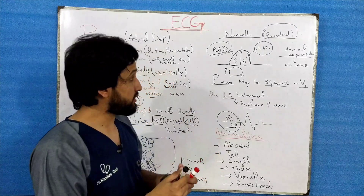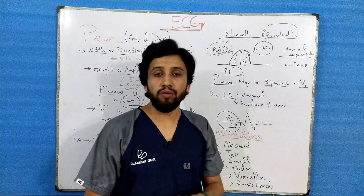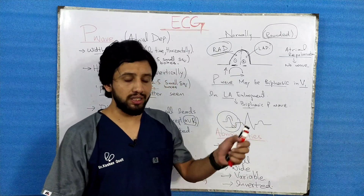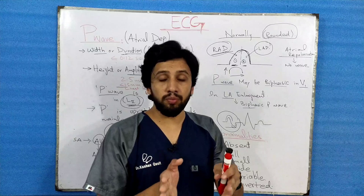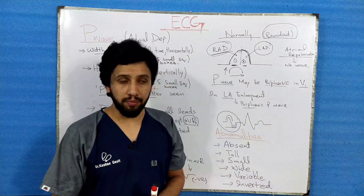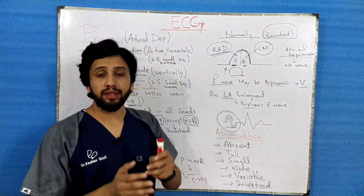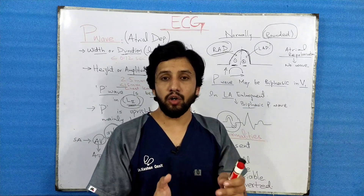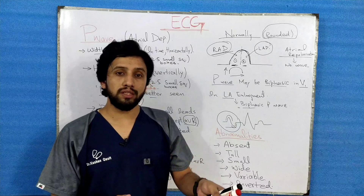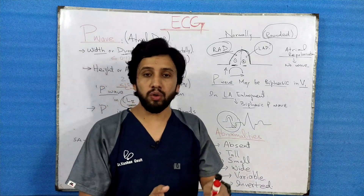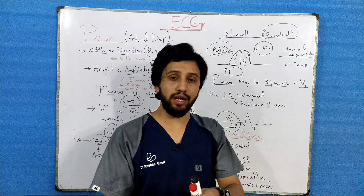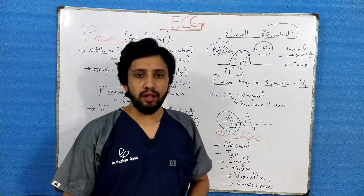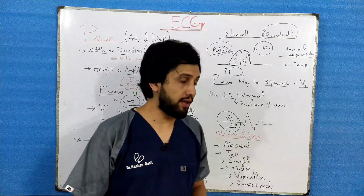An important question is: why is there no repolarization of the P wave visible on the ECG paper? Atrial repolarization is not seen because its amplitude is so minimal it cannot be recorded. There is also the possibility that the QRS complex, which is a high-amplitude complex, is superimposing on the atrial repolarization — that is why P wave repolarization cannot be seen on the ECG paper.